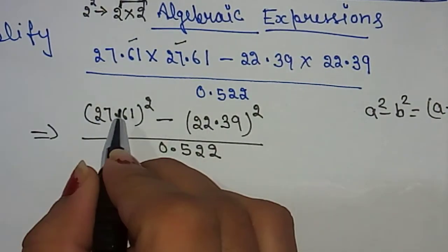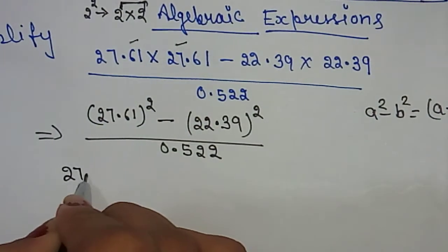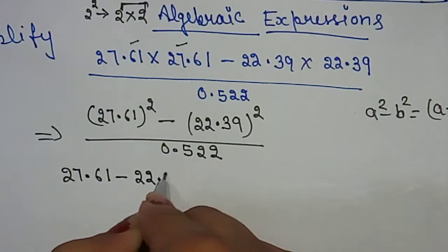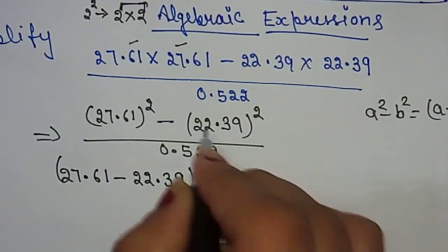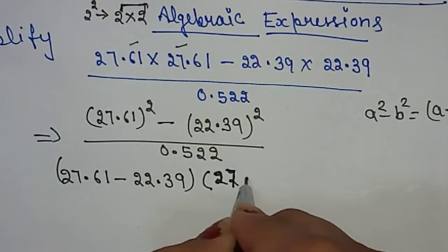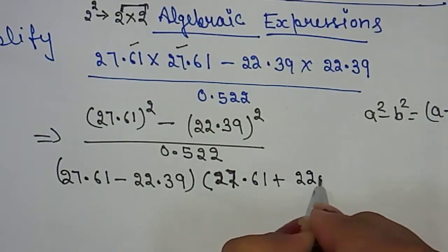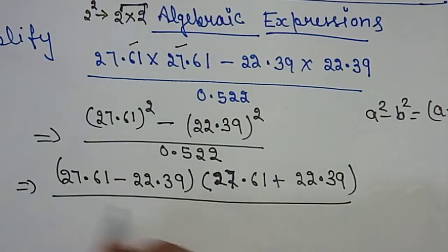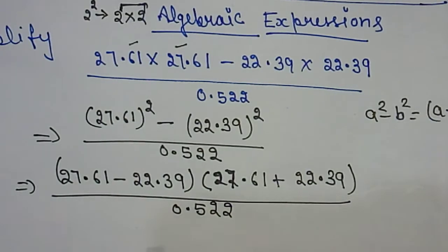So 27.61 - 22.39, then 27.61 + 22.39, divided by 0.522. The next step will be to calculate these values.